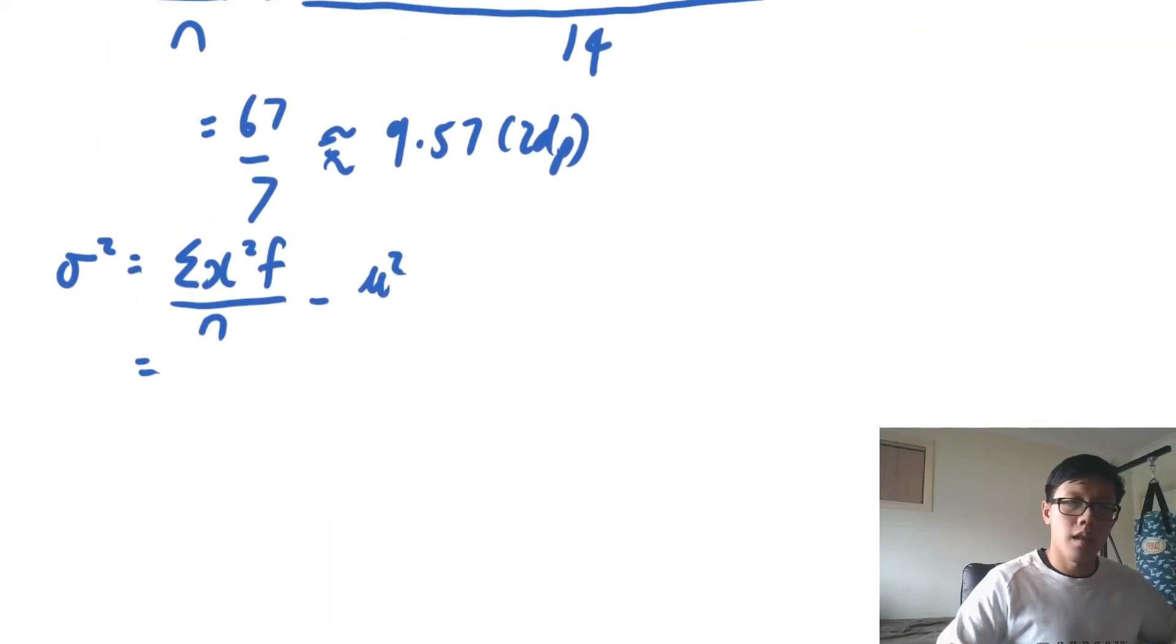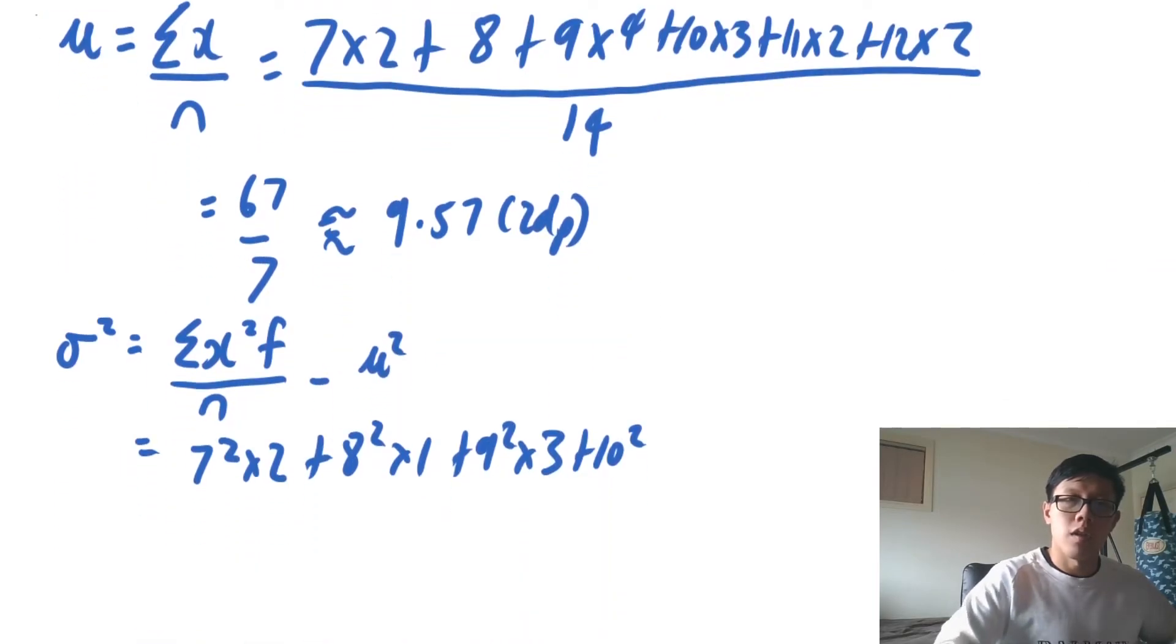And that is equal to 7 squared multiplied by 2 plus 8 squared multiplied by 1 plus 9 squared multiplied by 3 plus 10 squared... sorry it's 9 squared multiplied by 4